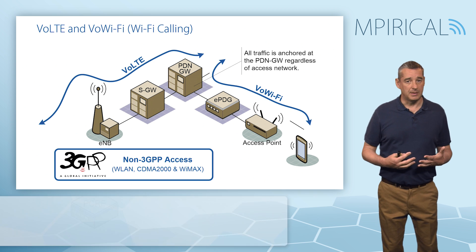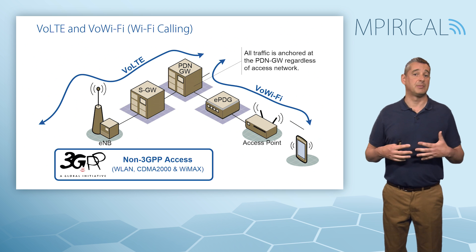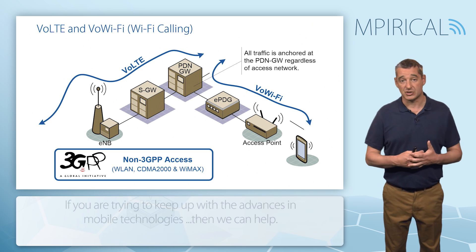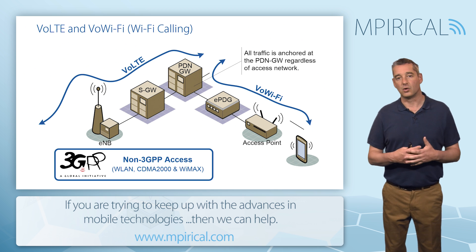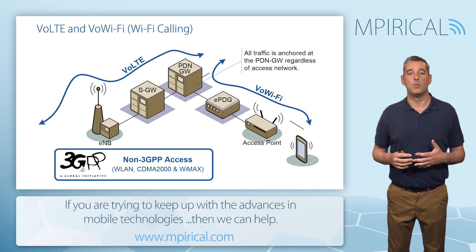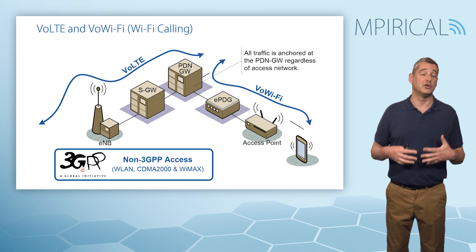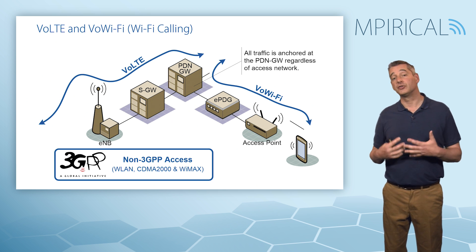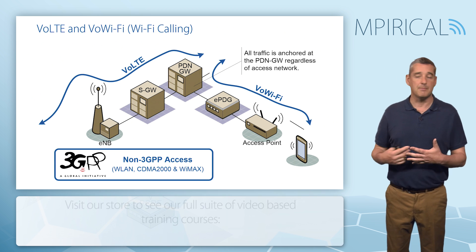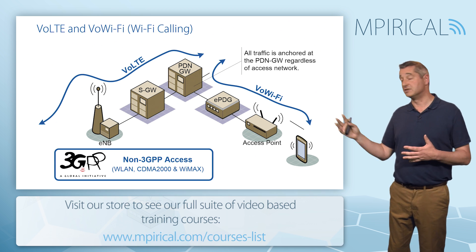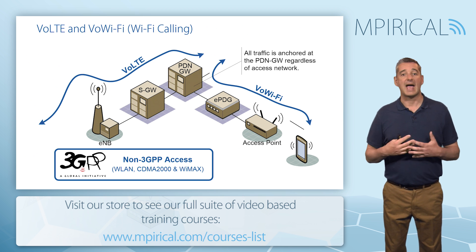As far as the 3GPP — the Third Generation Partnership Project — is concerned, this is the body responsible for defining the specifications about how this should work. They don't strictly refer to it as Wi-Fi calling; they refer to this whole process as non-3GPP access — in other words, using access networks which are not under its control. They give examples of these access networks in terms of WLAN or Wi-Fi, CDMA2000, and WiMAX.